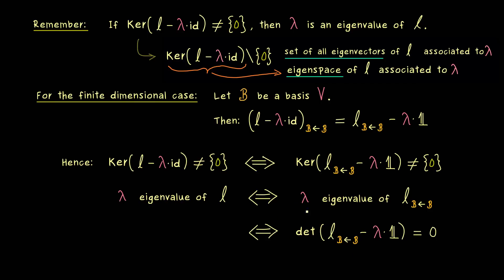However, now we already know that the determinant is also defined in the abstract sense, so without any matrix representation. Therefore you see we have a lot of equivalences here and all describe the same thing, namely that lambda is an eigenvalue.